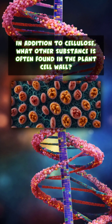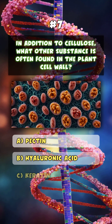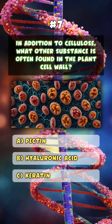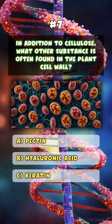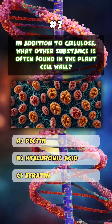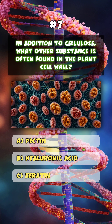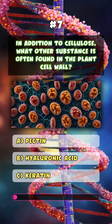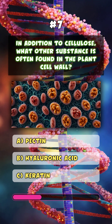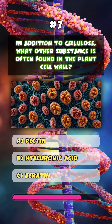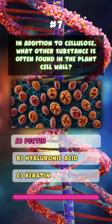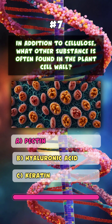In addition to cellulose, what other substance is often found in the plant cell wall? A. Pectin.